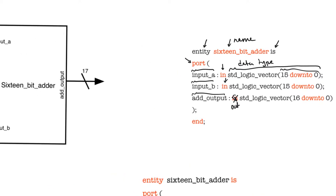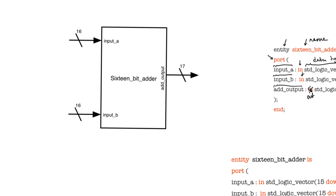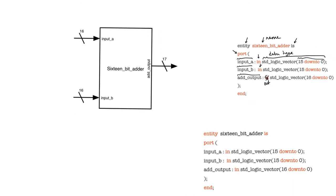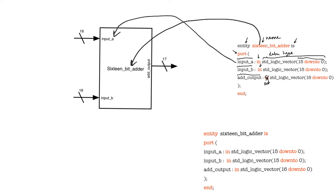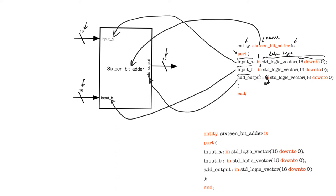The entity ends at this point. All it has done is describe that there is something called a 16-bit adder — this is the name of the entity. It has three ports: one input port called input A, one output port called input B, and one output port called add_out. The two input ports are 16 bits each and the output port is 17 bits.